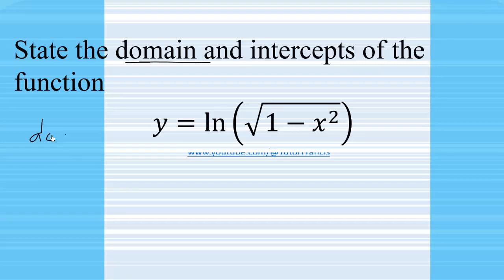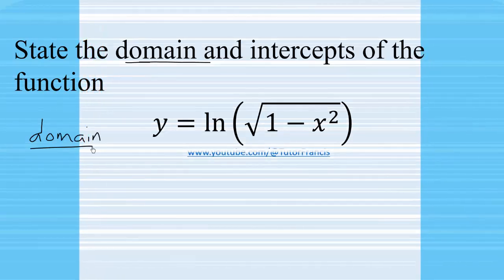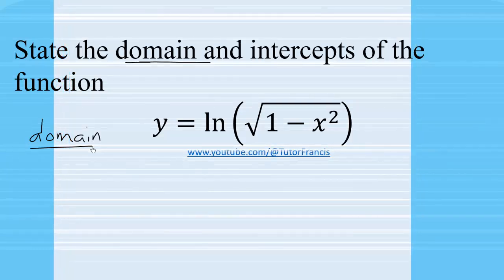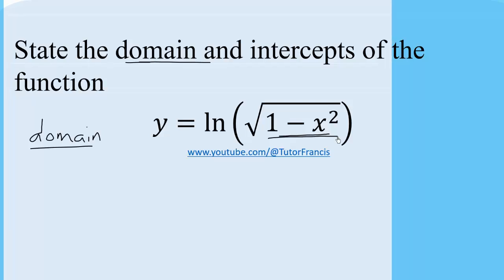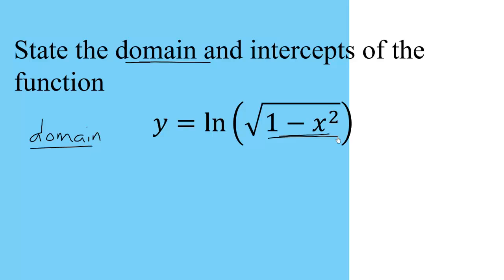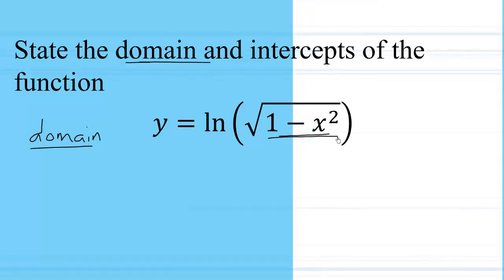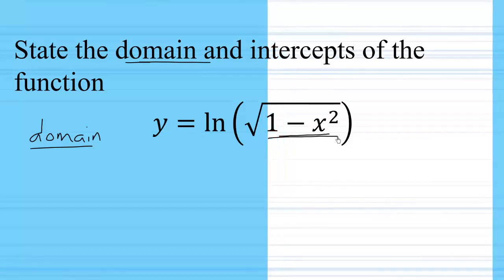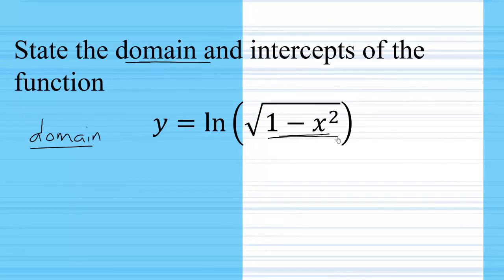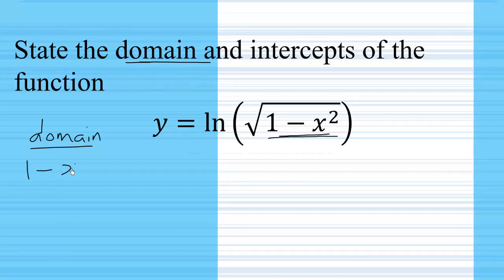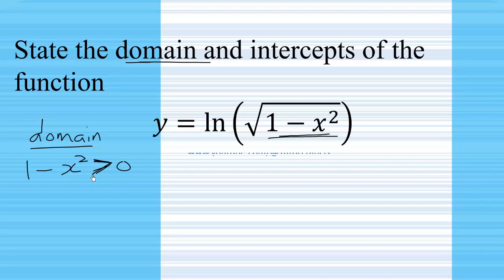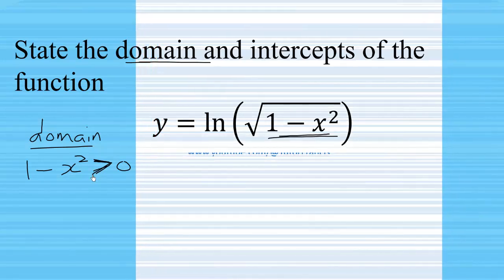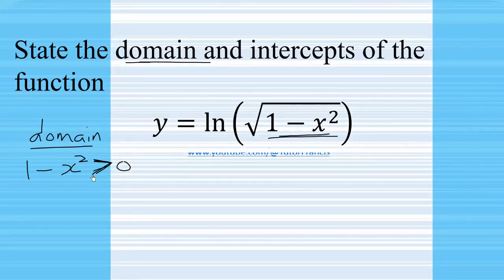Let's begin with the domain. The square root function is defined for all values greater than or equal to zero, but here we find the square root function inside the domain of the natural log function. The natural logarithm function overshadows the square root restriction, so the domain requires 1 minus x squared to be greater than zero, since the domain of the logarithm function must be greater than zero.